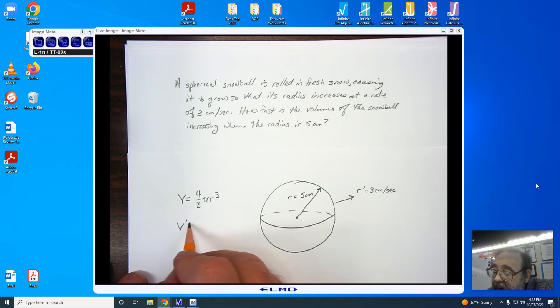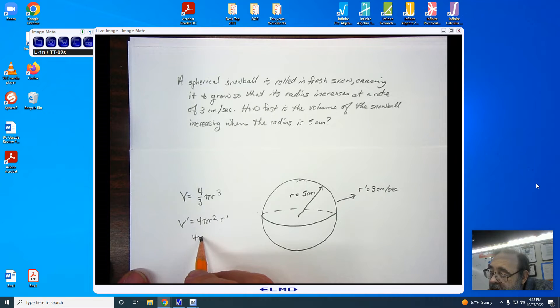That means that v prime has to equal 4 pi r squared times r prime, and we're going to replace our values. The r is 5 centimeters, so we're going to put, let's make sure we put our units in, 5 centimeters, 5 centimeters, the quantity squared,